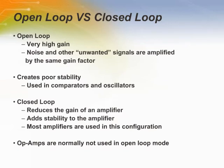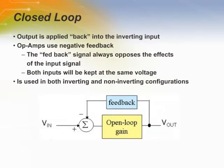Operational amplifiers are not used in open-loop configurations. In open-loop, amplifiers have very high gain; however, noise and all other unwanted signals are gained up by the same factor as the wanted signals. The open-loop configuration has very high sensitivity and is mainly used in comparators, which are not op-amps. Closed-loop reduces the gain of the amplifier but adds stability, and op-amps are used in closed-loop configurations. In closed-loop, part of the output signal is applied back into the inverting input, creating negative feedback. Positive feedback is mainly used in oscillators.